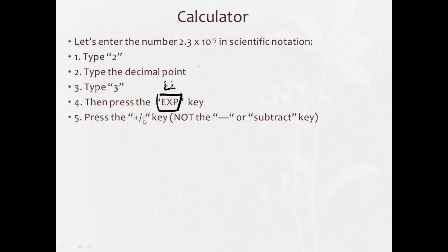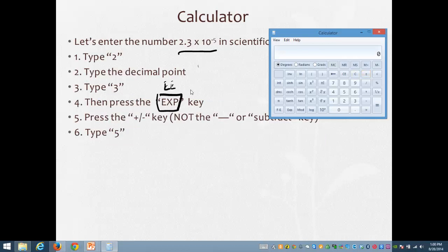Then I'll hit the plus minus key, right? Not the subtract key, but there's a plus minus key because I want it to be negative 5, and then 5. And then if I have an enter, I can hit that. But at this point, I've entered this in scientific notation.